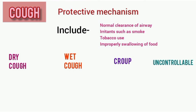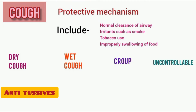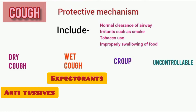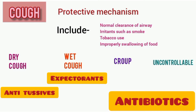The topic is expectorants and antitussives. For dry cough, we use cough suppressants, which are antitussives. For wet cough, we use expectorants. For croup, which involves uncontrollable cough, we use antibiotics. For whooping cough, in some cases we use over-the-counter drugs. Expectorants are not used for this type of cough.